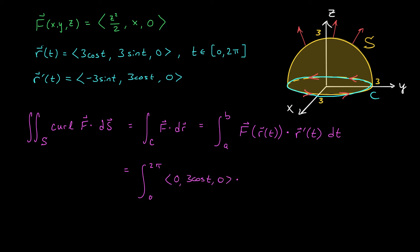⟨-3sin(t), 3cos(t), 0⟩. There's only one surviving term. We have the integral from 0 to 2π of 9cos²(t) dt.